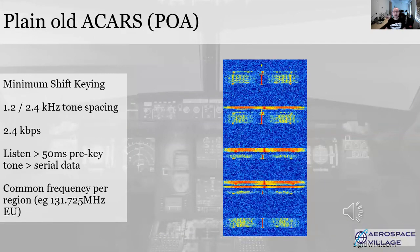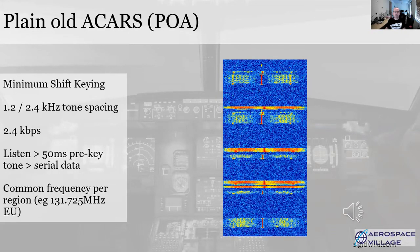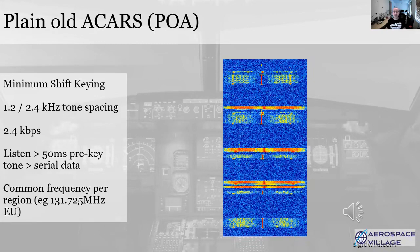Original ACARS uses a signal with each bit encoded as a half-bit sine wave on top of the carrier, which you can see in a waterfall image that most software defined radio tools will generate. The modem will briefly listen to avoid transmitting at the same time as others, send a starting tone, then the serial data — and you can hear this as a fairly distinctive old-school modem noise. As it's VHF and line of sight, each geographic region uses a different frequency, and this is per data link service provider as well, so ARINC in Europe is a different frequency to SITA in Europe, and the aircraft modem will usually automatically switch frequencies based on its known position.